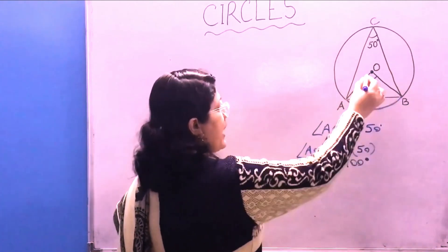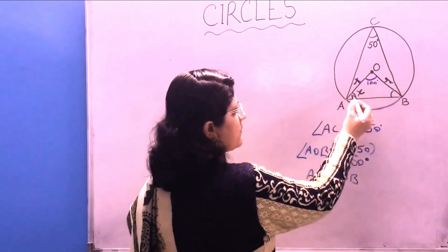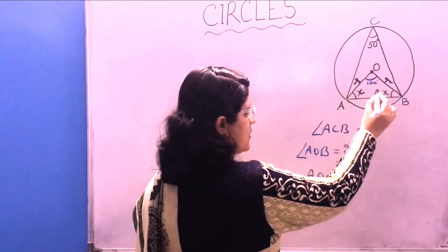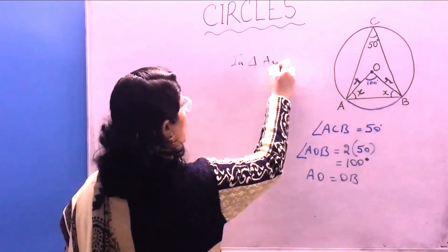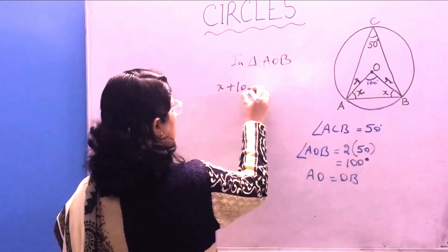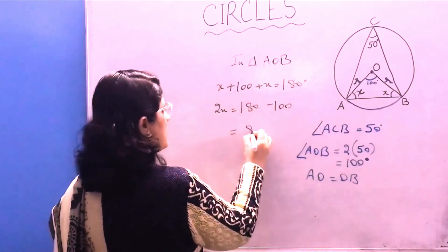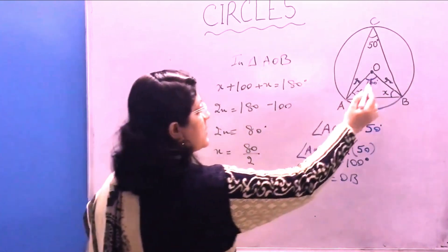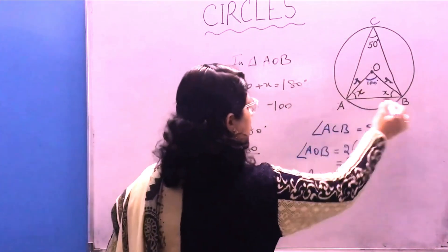Now, since AO equals OB — both being radii of the same circle — the base angles of triangle AOB are equal. Let each be X. By the angle sum property: X plus 100 plus X equals 180 degrees. So 2X equals 80, meaning X equals 40 degrees. Therefore angle OAB equals 40 degrees and angle OBA equals 40 degrees.